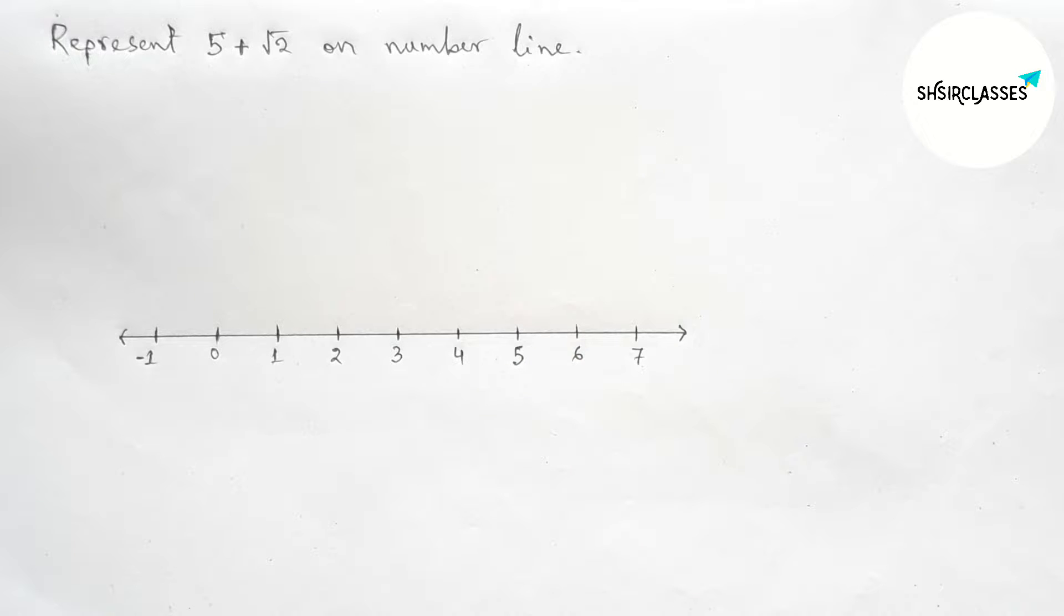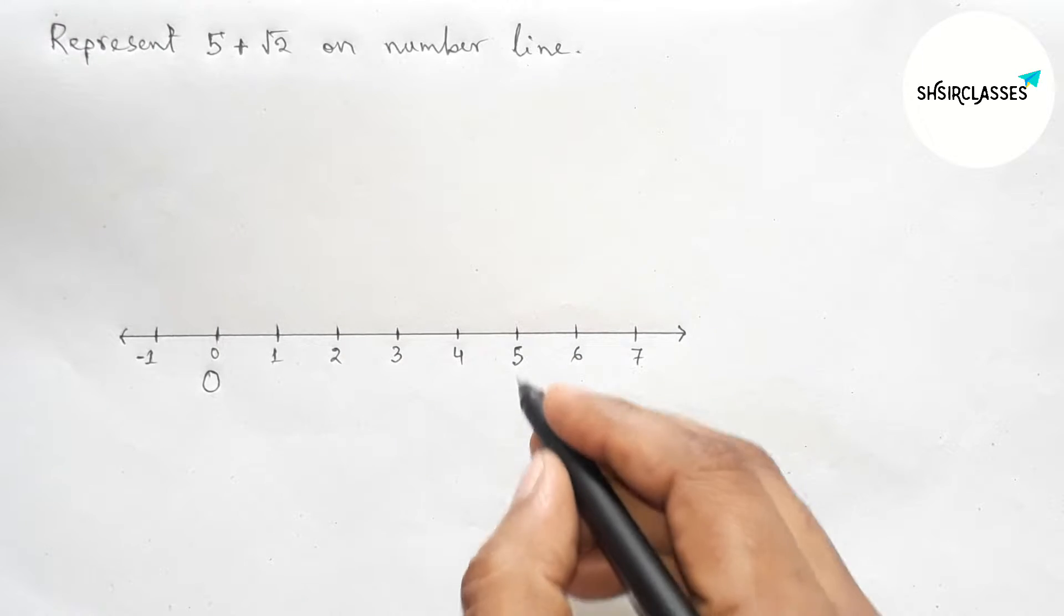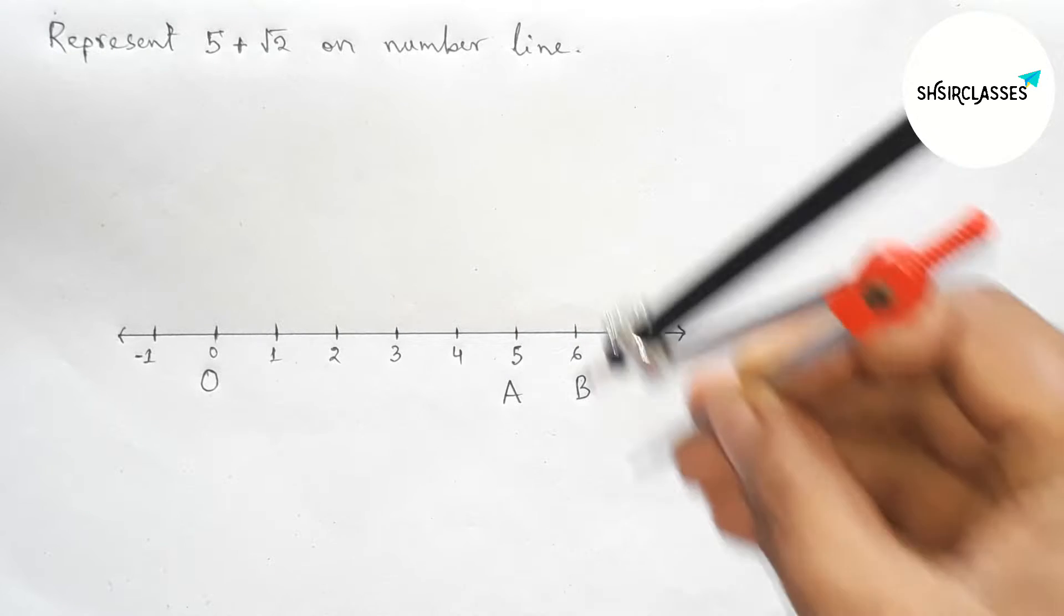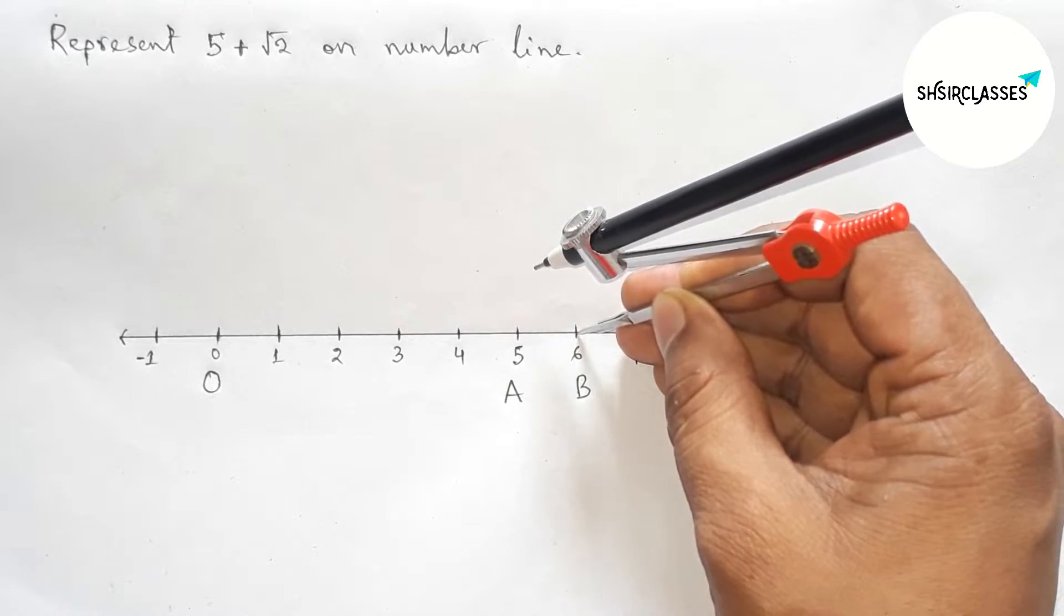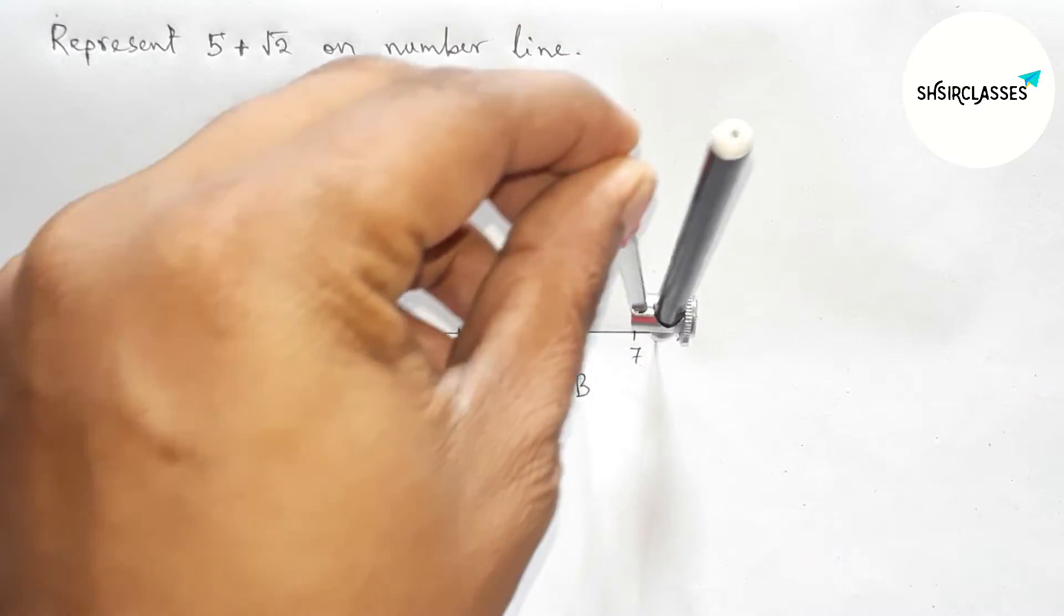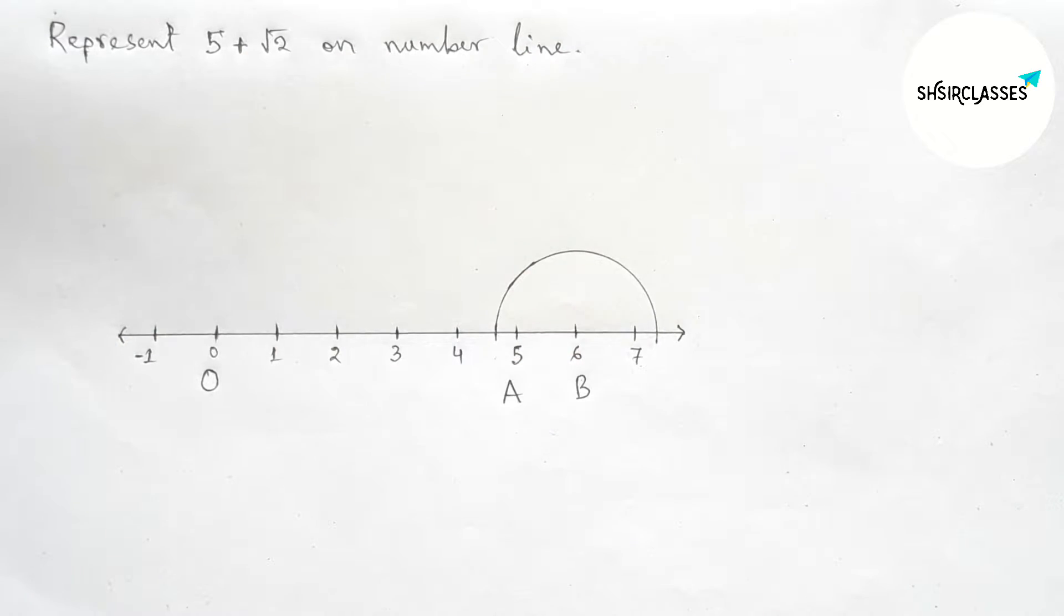First drawing a 90 degree angle on the point B or 6 with the help of compass. So taking any length and first drawing here an arc by this way.